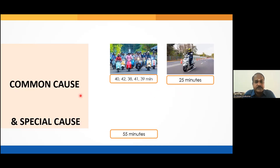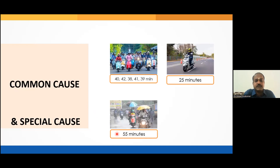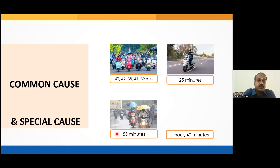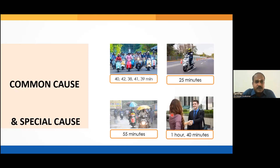Another day it took 55 minutes — is that common cause or special cause? Definitely special cause, because 55 is far away from the average of 40, and the reason is it was raining. Another day it took 1 hour 40 minutes — also special cause. In my opinion, very special, because you met your boyfriend or girlfriend on the way and decided to spend an hour in a coffee shop! So: if you can explain the reason for variation, it is special cause; if you cannot, it is common cause.